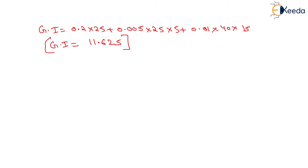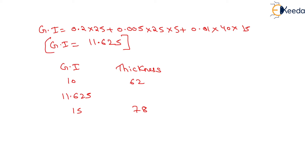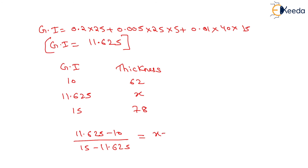The group index value and thickness is given in the table. Our group index value of 11.625 lies between 10 and 15, whose corresponding thickness values are 62 and 78. We need to determine the value of X, that is the thickness, using the interpolation method: (11.625 minus 10) divided by (15 minus 11.625) equals (X minus 62) upon (78 minus X).